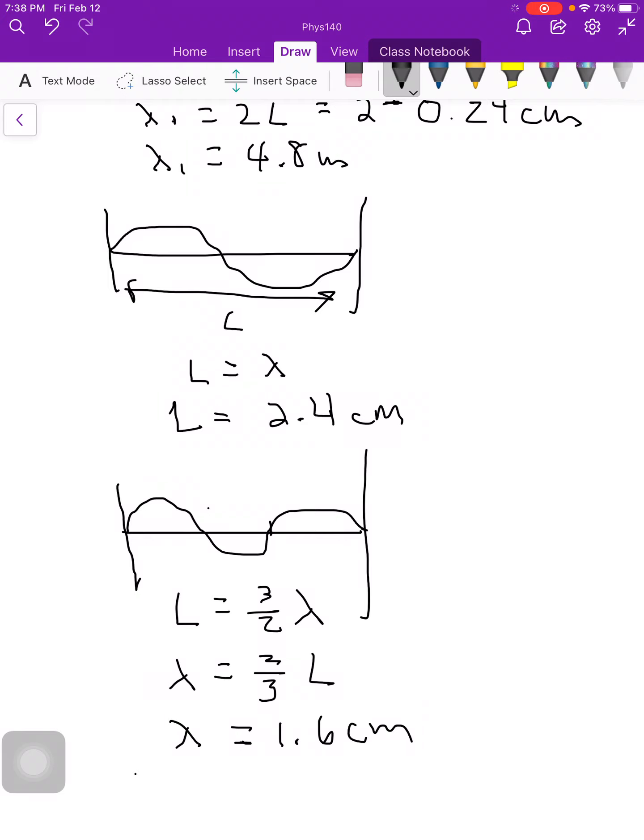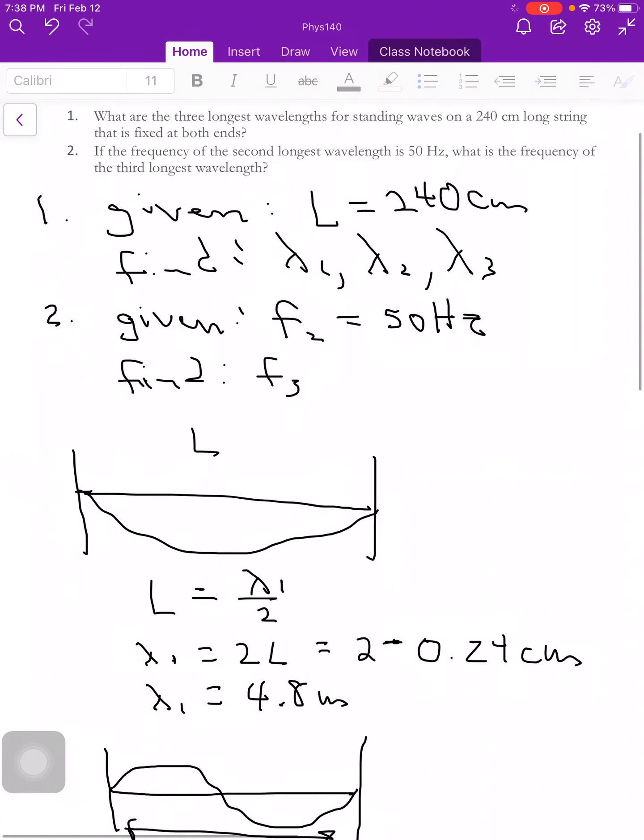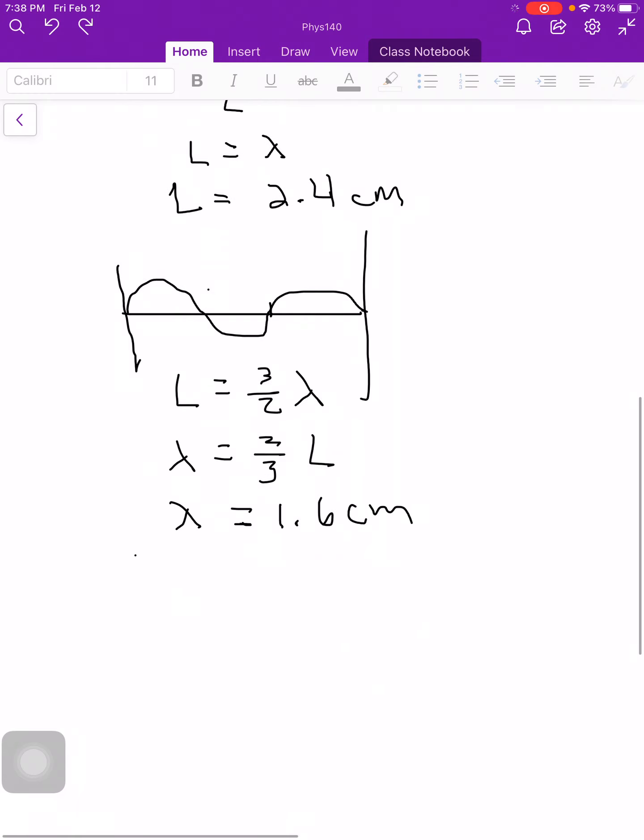Okay, so I've finished part one. And now part two, let's look back and we'll just check. Part two says given f2 is equal to 50 hertz, find f3. Okay.